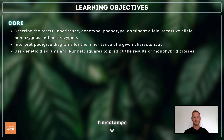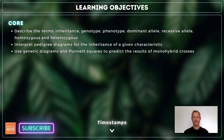For topic 17.4, you need to describe the terms Inheritance, Genotype, Phenotype, Dominant Allele, Recessive Allele, Homozygous and Heterozygous, use genetic diagrams and Punnett squares to predict the results of monohybrid crosses, and interpret pedigree diagrams for the inheritance of a given characteristic.